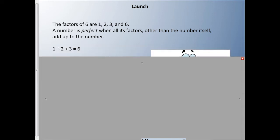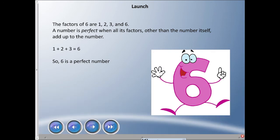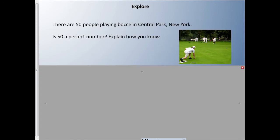I'll give you an example here. 1 plus 2 plus 3 equals 6, so they call that a perfect number. Let's say there's 50 people playing bocce in Central Park in New York. Is 50 a perfect number? Explain how you know.